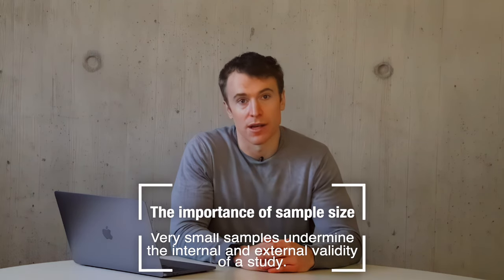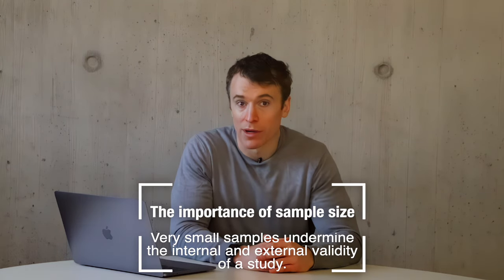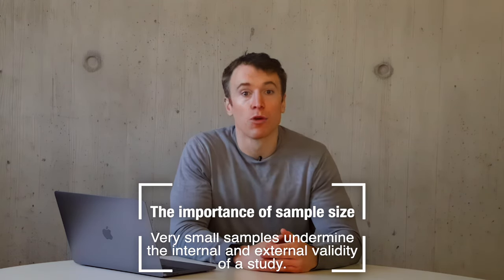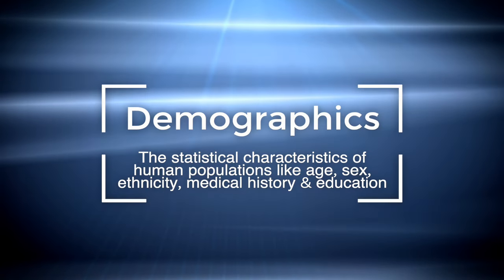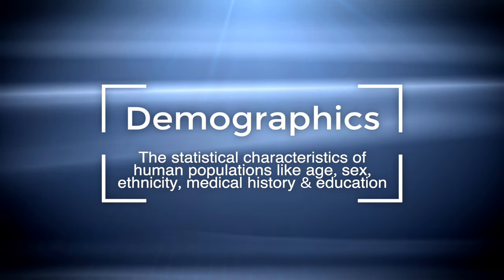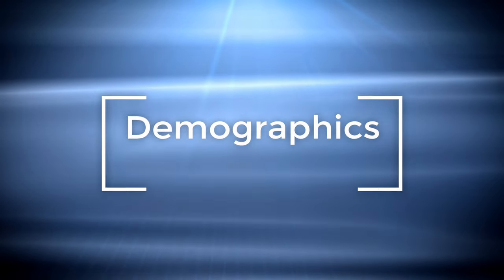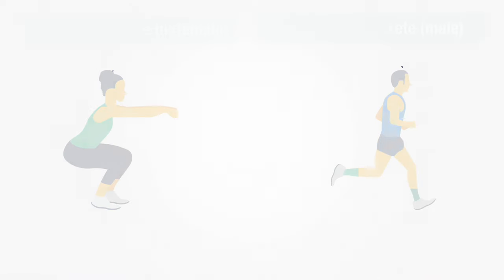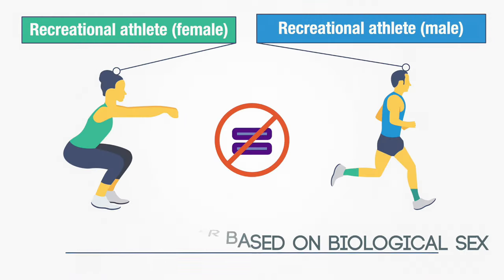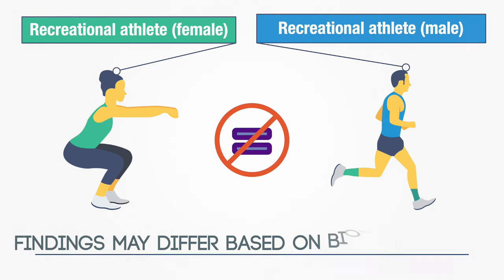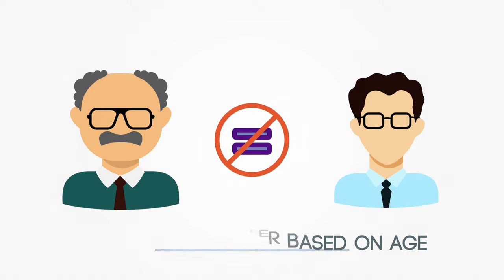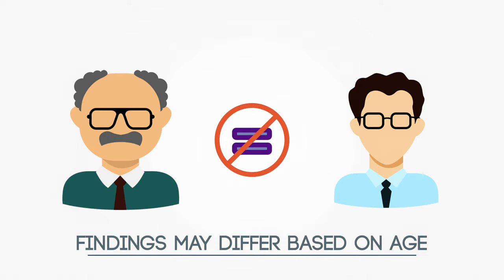The larger the sample size of a study — in other words, the more participants it has — the more reliable its results. The demographics of the sample will also play an important role in the external validity of the results, that is, how well the outcome of the study could be applied to other groups or settings. For instance, if a trial only recruited men, you wouldn't necessarily be able to apply those results to women. Likewise, an intervention tested in young athletes may yield different results when performed on an elderly sample of participants.